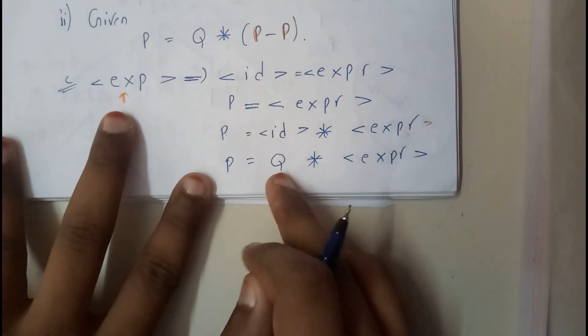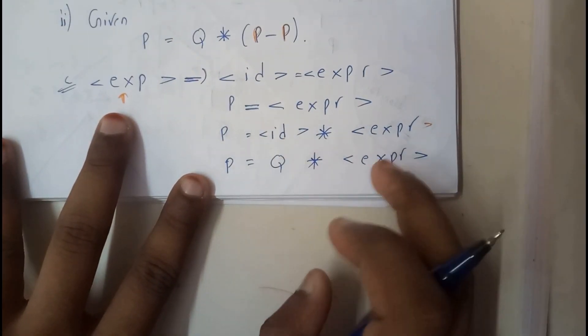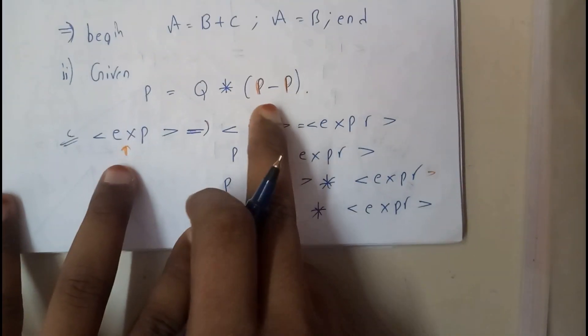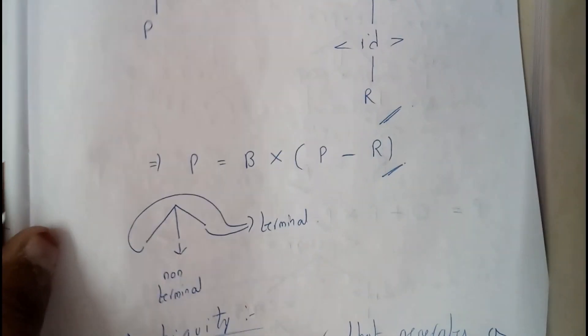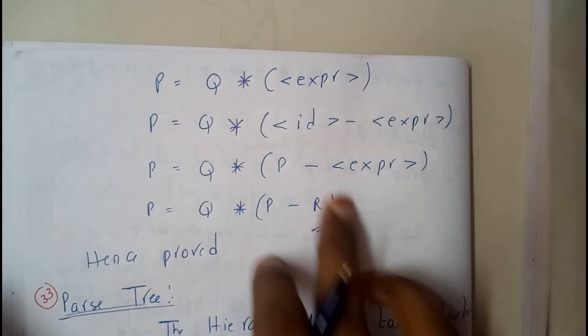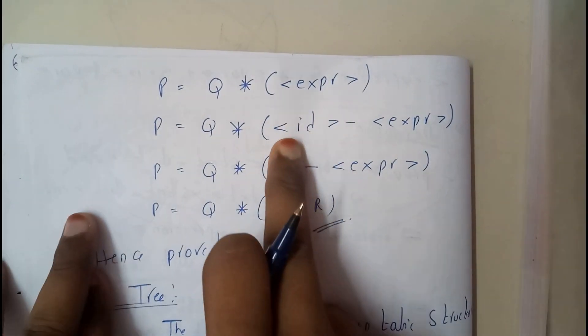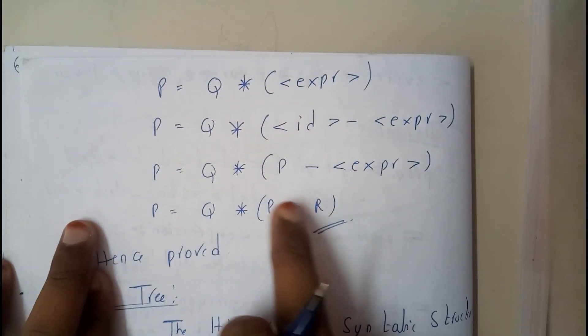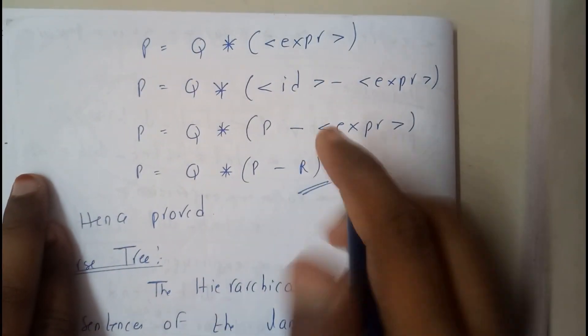That expression will be identifier minus expression or identifier minus identifier. So expression can be written as identifier minus expression: P minus expression, which is P minus R. That is how we write the grammar derivations.